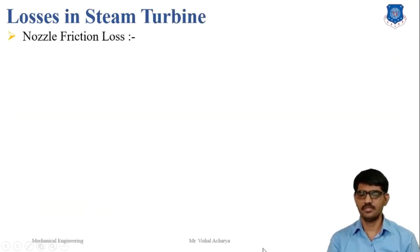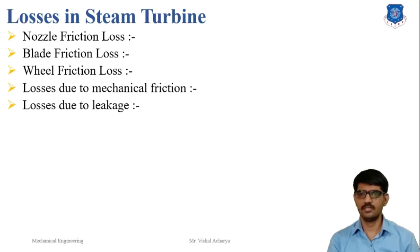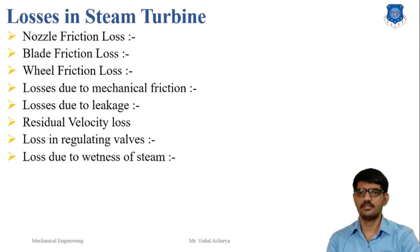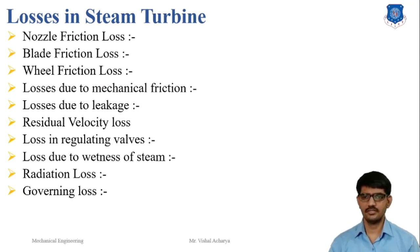Next are the losses in the steam turbine. First is the nozzle friction loss. Second is the blade friction loss. Third is the wheel friction loss. Fourth is the loss due to mechanical friction. Fifth is the loss due to leakage. Sixth is the residual velocity loss. Seventh is the loss in the regulating valves. Eighth is the loss due to the wetness of steam. Ninth is the radiation loss. Tenth is the governing loss.